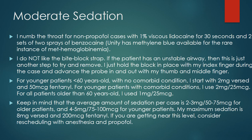For younger patients less than 60 years old with no comorbid conditions, I usually start with 2 milligrams of Versed and 50 micrograms of fentanyl. Wait every 3 minutes before giving the next round. For younger patients with comorbid conditions, I use 2 mg Versed and 25 mcg fentanyl. For all older patients, I start with 1 mg Versed and 25 mcg fentanyl and step up appropriately.